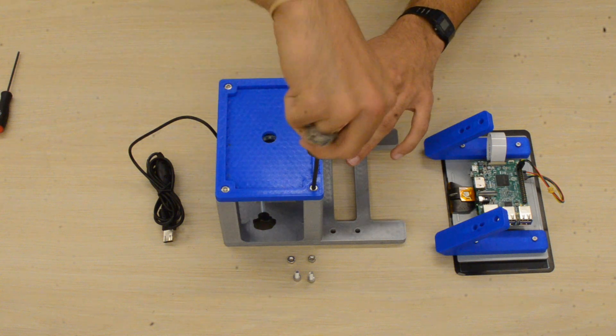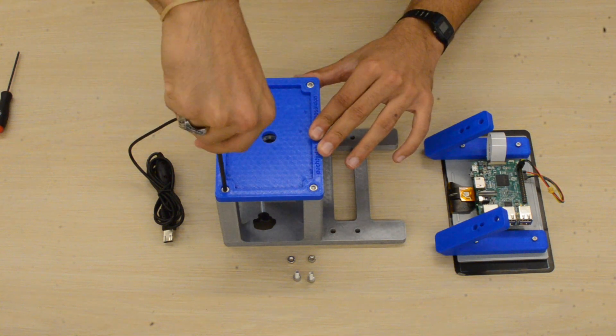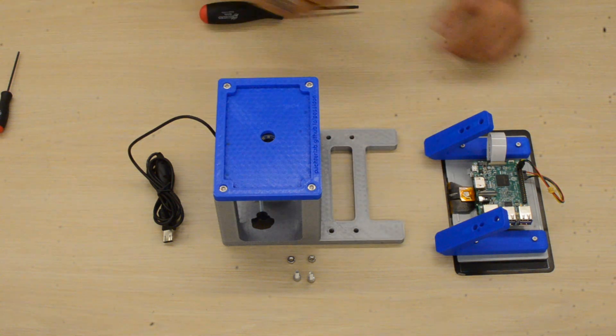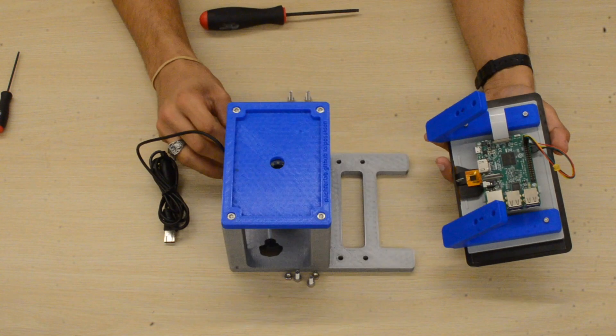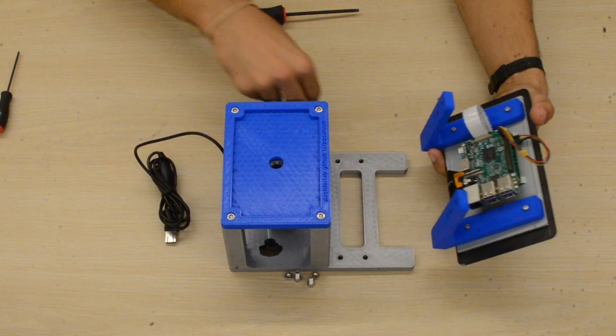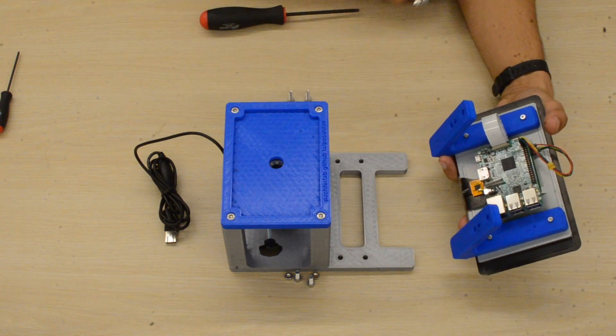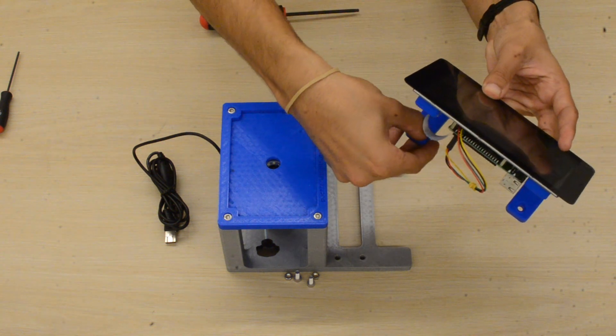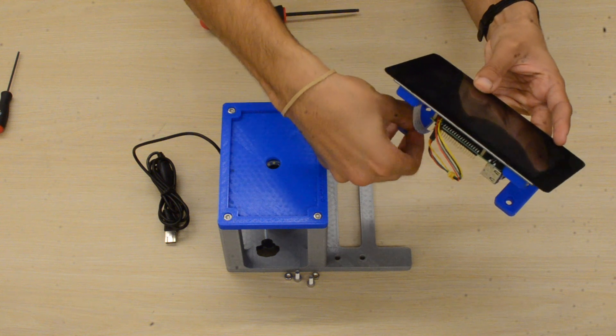So go ahead and tighten those down. Make sure they're nice and snug, but you don't have to over-tighten them; that'll just ruin the plastic. Okay, next we'll take our screen mount assembly and we'll place it on the base. And you'll notice that in order to mount these, we'll be using these M5 nuts, which will go on the top of these legs, and the M5 screws will thread through the bottom of the base in order to secure it in place.